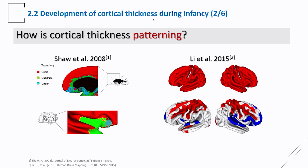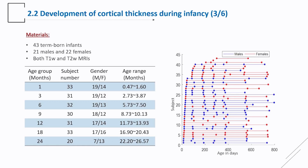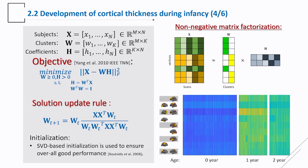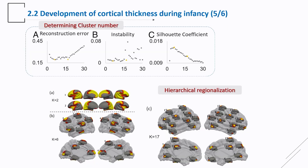To study spatial and temporal development, we leveraged a dataset of 43 term-born infants with seven scheduled scans before two years of age; 40 infants had more than four or five structural scans during infancy. For the method, we used non-negative matrix factorization to extract co-developing vertices — vertices that increase and decrease simultaneously in a similar pattern — which we call a similar developmental pattern.